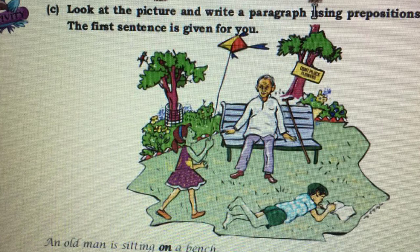Can we see a boy? Yes. Where is he lying? We can see a boy lying on the grass, writing something with his pen. Can you see a girl? A girl is flying a kite. The kite is flying above the old man.